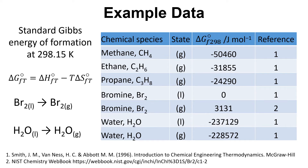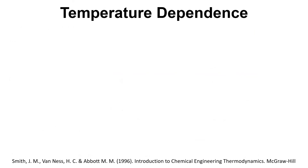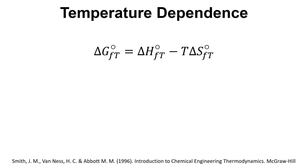We also have the relationship delta G equals delta H minus T times delta S, so if we have any two of these values we can work out the third. For temperature dependence, delta G of formation equals delta H of formation minus T times delta S of formation, and we're going to use this to work out how Gibbs energy of formation varies with temperature.